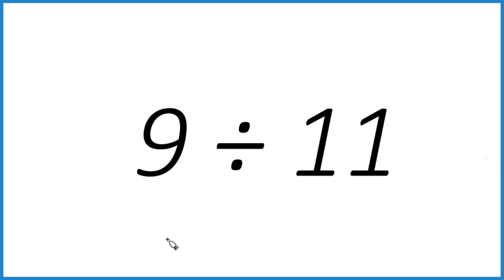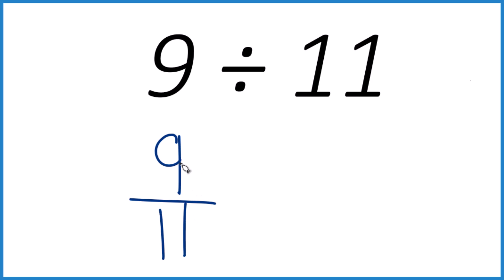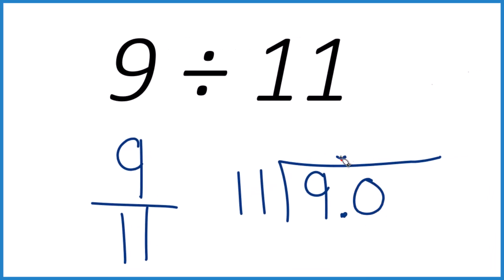You can think about 9 divided by 11 as 9 over 11. How many times does 11 go into 9? So let's set it up. So 11 doesn't go into 9. We can call it 9.0, as long as we put a decimal point up here.